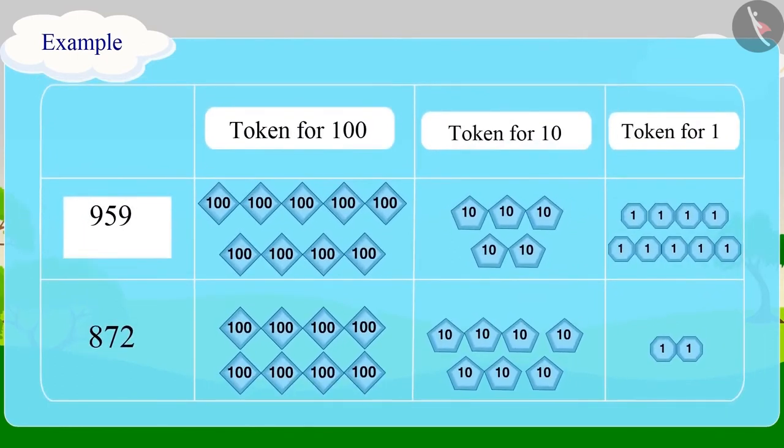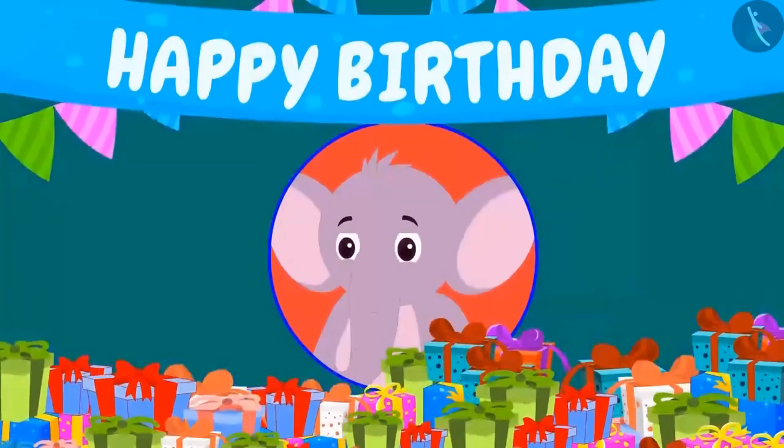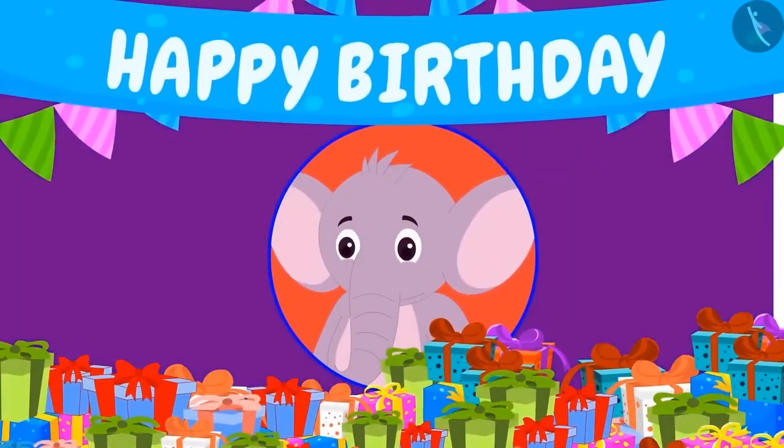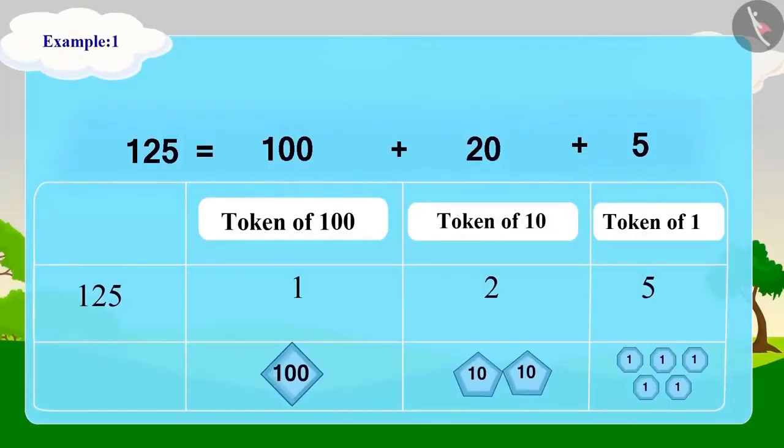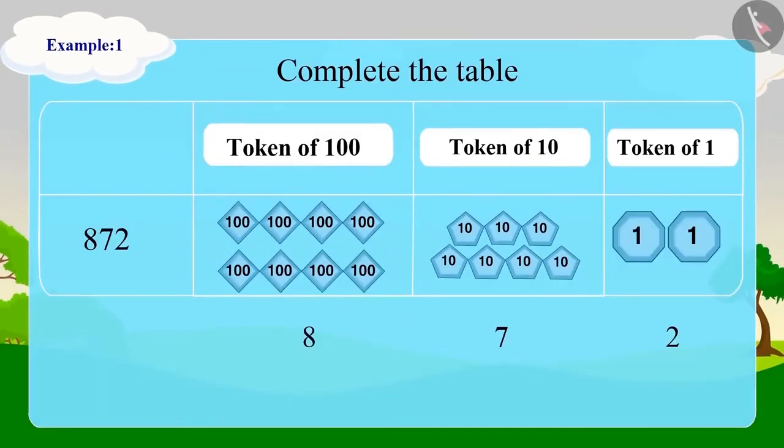Well done, children. You have given the correct answers. Appu is so happy to see so many gifts. So children, in this lesson, we learned to write three-digit numbers using tokens.